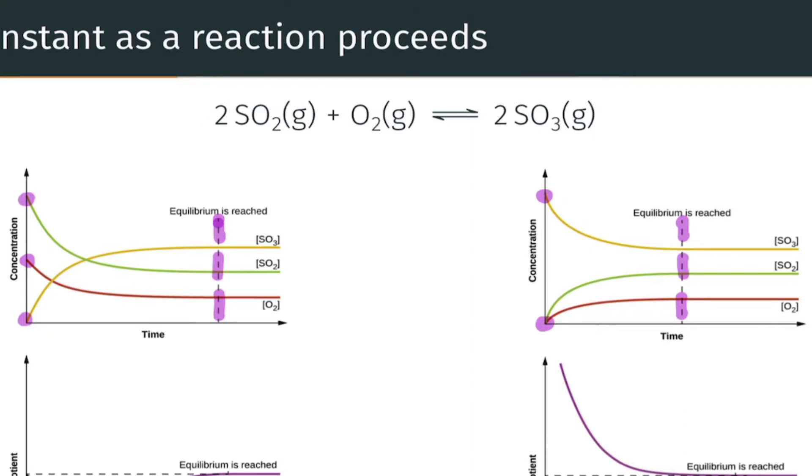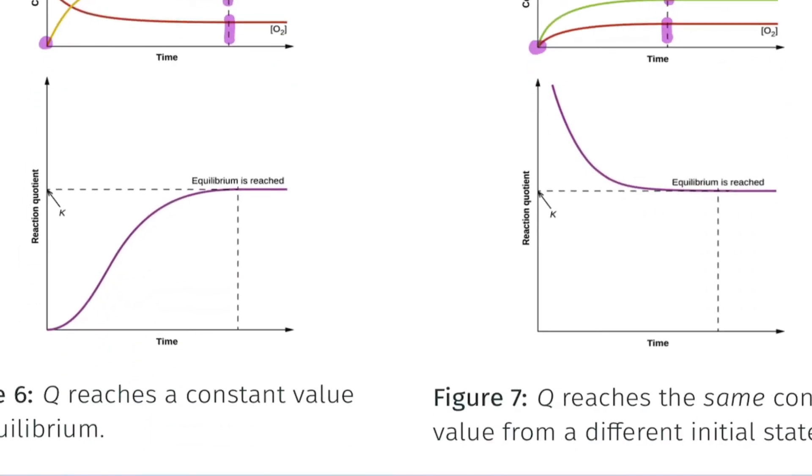If we follow the value of Q, well since we started at a different place, the values of Q initially are different in these two reactions. In fact Q is zero in the case when we start with no product and Q is infinite in the case when we start with no reactants.